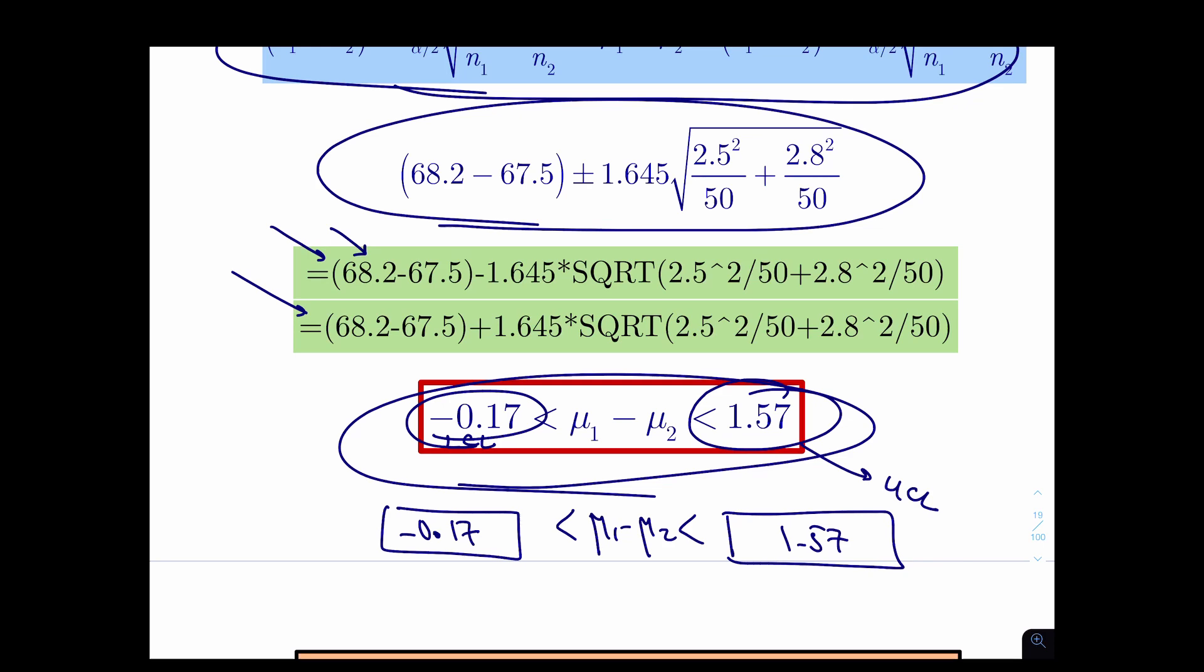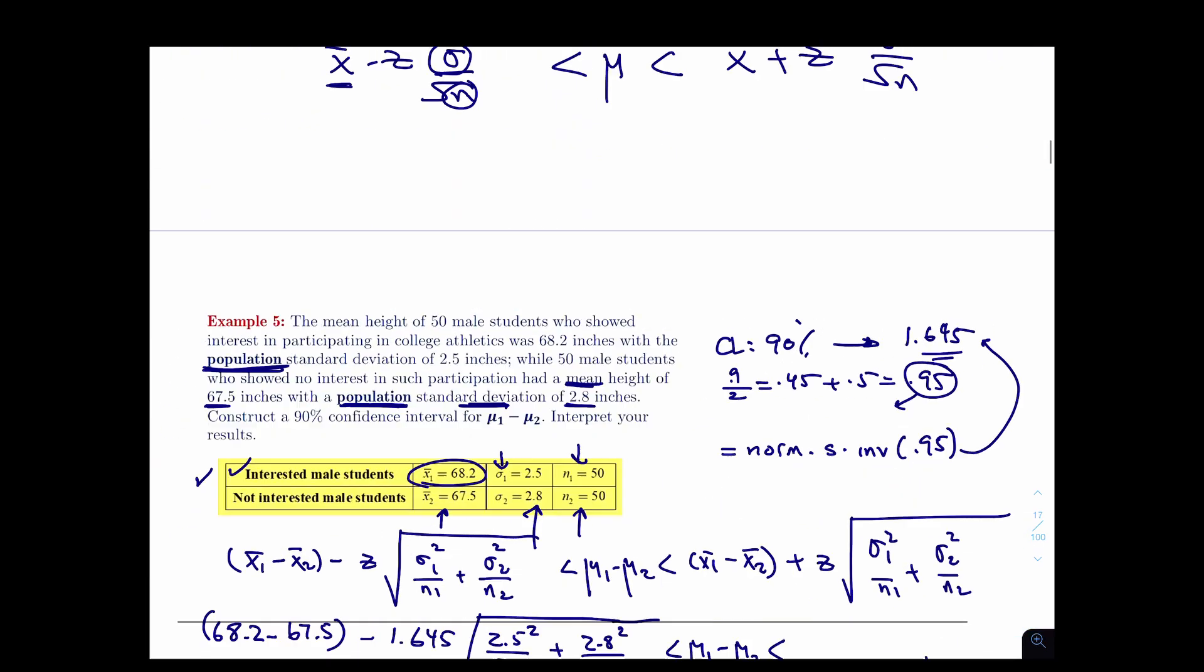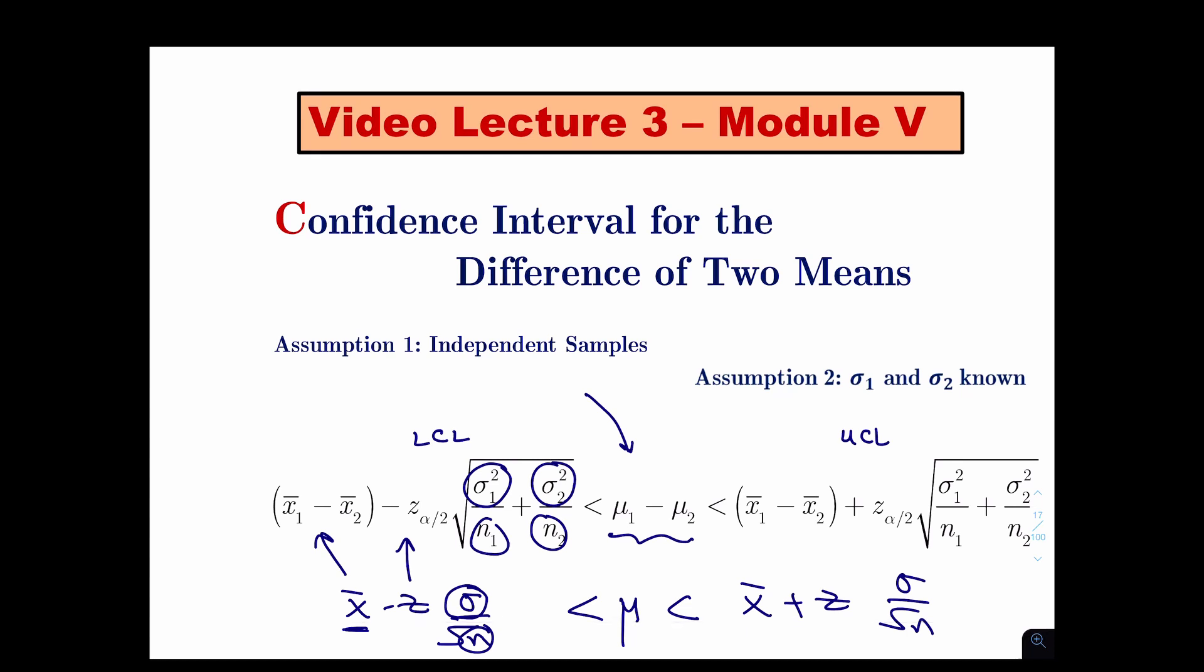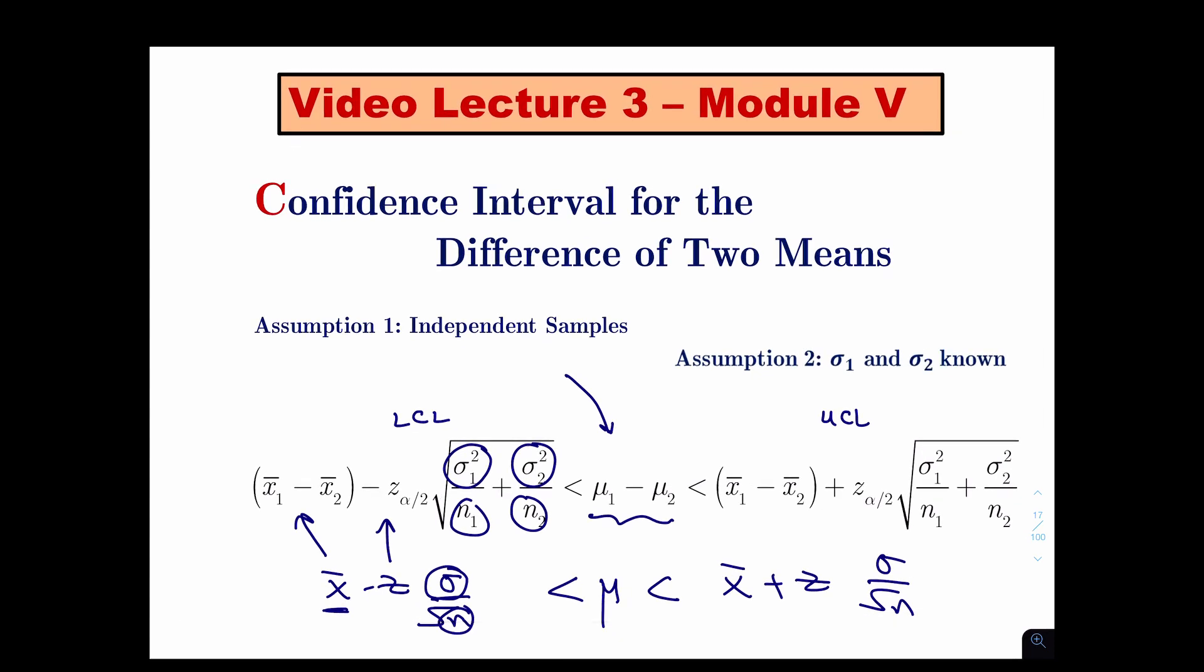So that's how you construct the confidence interval for the difference of two means when population standard deviations are given. Thank you.